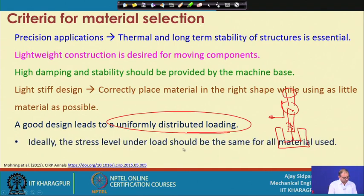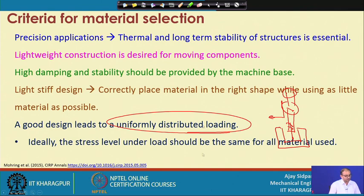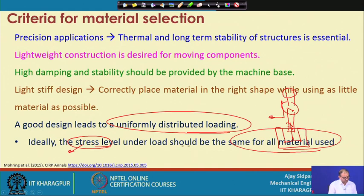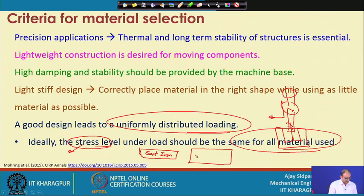Ideally, the stress level under load should be the same for all materials used. We use different materials at different locations for different components, and because all materials have different properties, they create different stress levels. We have to ensure that whatever stresses are generated, they are the same for all materials. For example, if one part is cast iron and you use aluminum instead, you can increase the size of the aluminum component so that the stress level is maintained under the same loading.